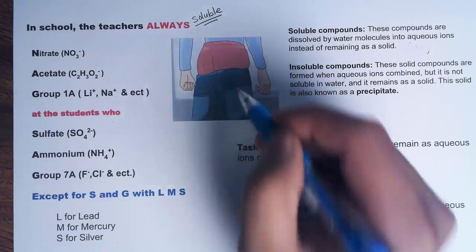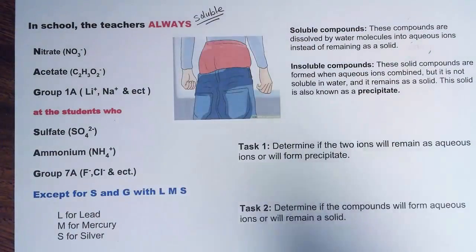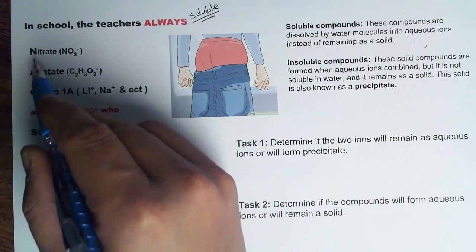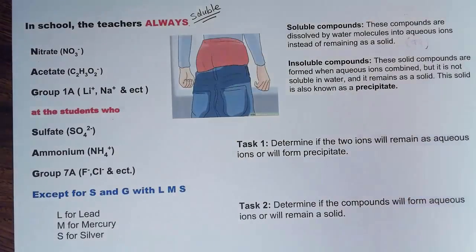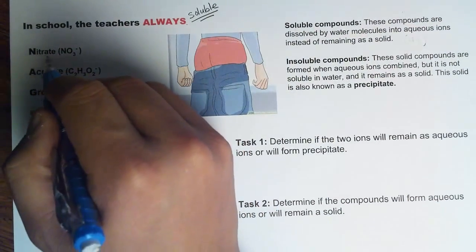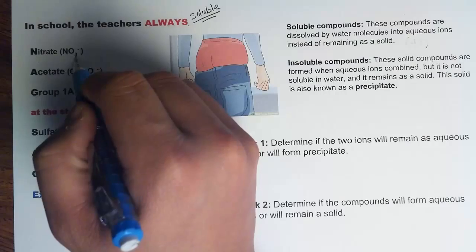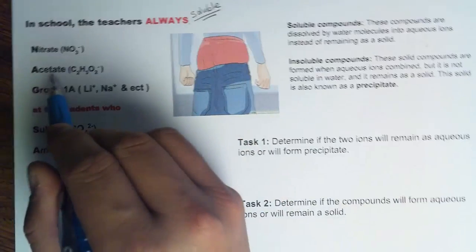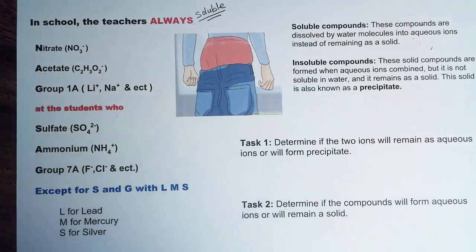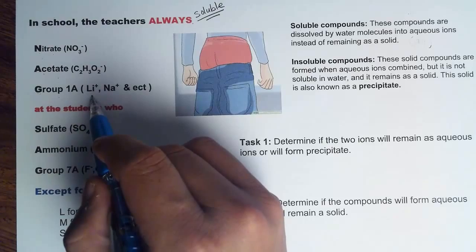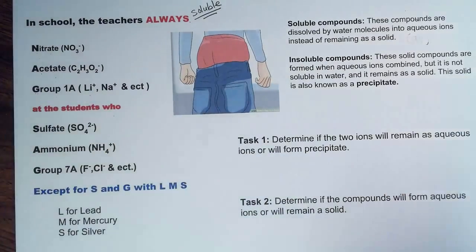This student who sags will be nagged by the teacher always. For NAG: N represents nitrate — any compound with nitrate will be always soluble. A is for acetate — any compound with acetate will always be soluble. And any compound with the ions of Group 1A will always be soluble.